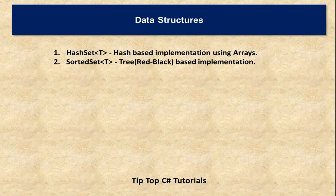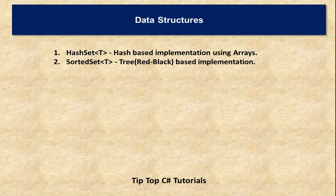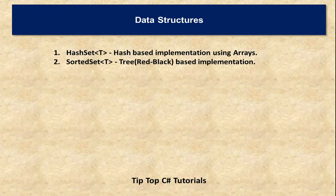There are two types of set implementations in the .NET framework. One is based on hash and arrays, and another is based on a special self-balancing tree called a red-black tree. The hash-based implementation is called HashSet, whereas the tree-based implementation is called SortedSet. The primary difference is that HashSet does not consider ordering as an important feature, so elements are not in any sorted order, whereas SortedSet maintains elements in sorted order.